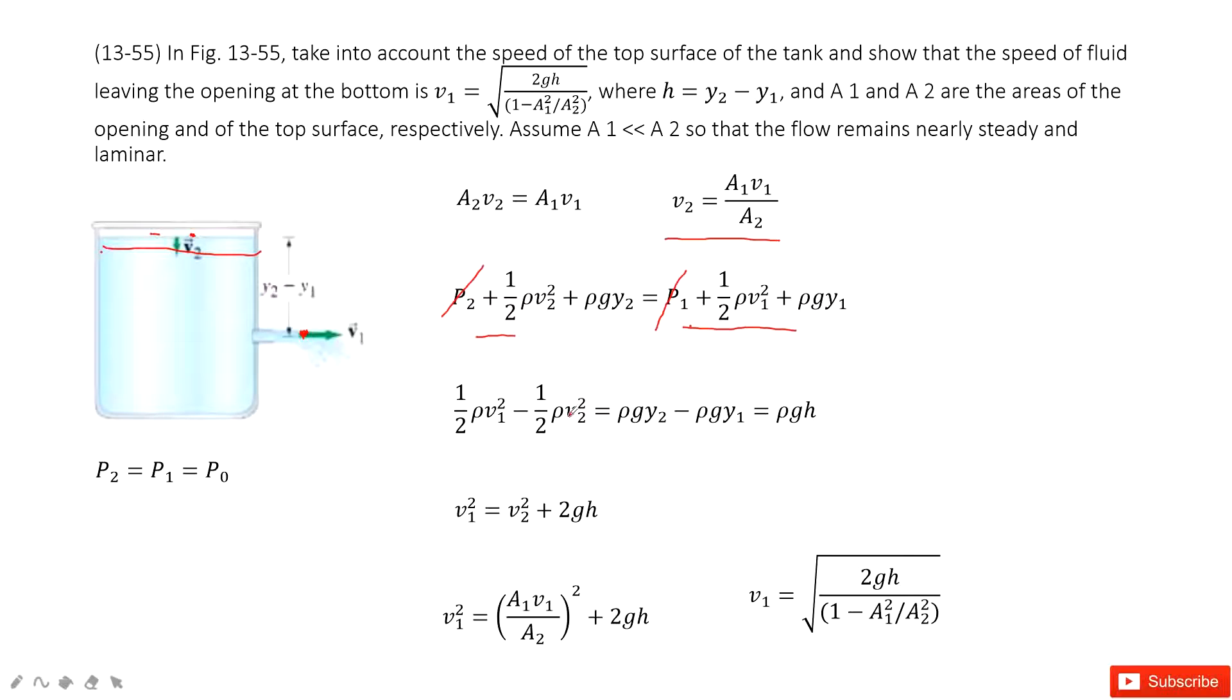Now we can solve the equation to find V1. So we can transform this equation in this way. Now you can see we get Y2 minus Y1 is H. This is given as H equal to Y2 minus Y1. Now we can solve this equation in this way. Because now the terms cancel, so it becomes V1 squared equals V2 squared plus 2gh. And we input V2 inside. We can get this function for V1, this one.